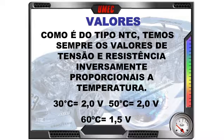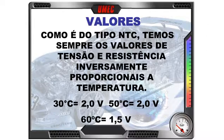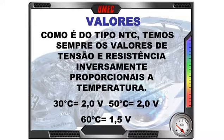Como o módulo pega essa informação? Alimentando com 5 volts o sensor. Do outro lado da resistência, aterramento. Com resistência menor, os 5 volts sofrem queda. Com resistência maior, os 5 volts não sofrem queda — proporcional à temperatura do sensor. O sensor não dá a informação em graus, dá em volts. A ECU faz os devidos cálculos dessa tensão elétrica para identificar a temperatura do ar admitido, porque isso influencia a queima e a formação da mistura.